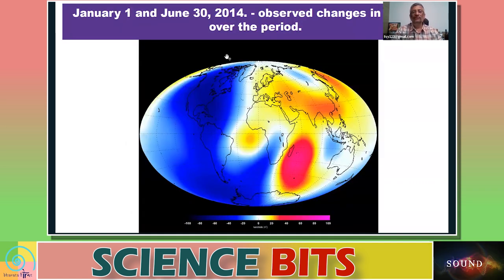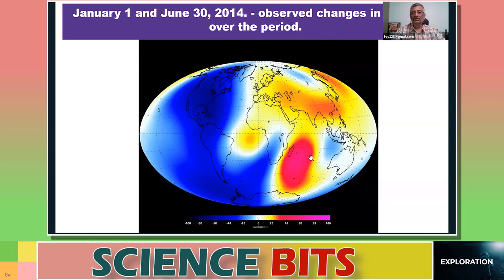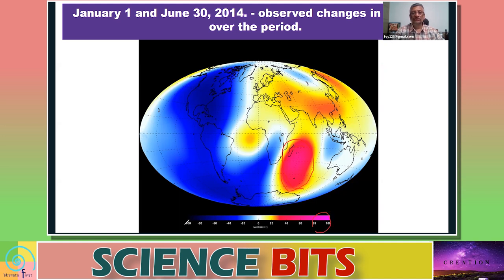So there has been a study which looked at the changes in the magnetic field between January 1 and June 30 of 2014. This was observed using a satellite. So you can find that there is a huge change that happened here.